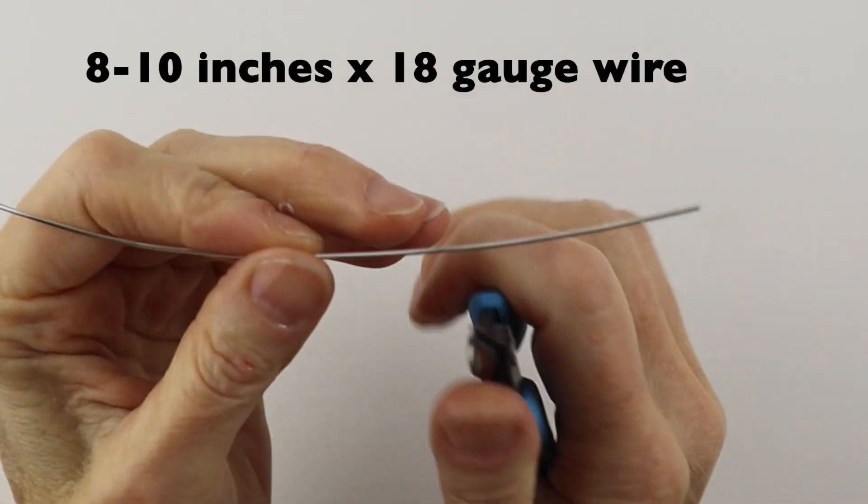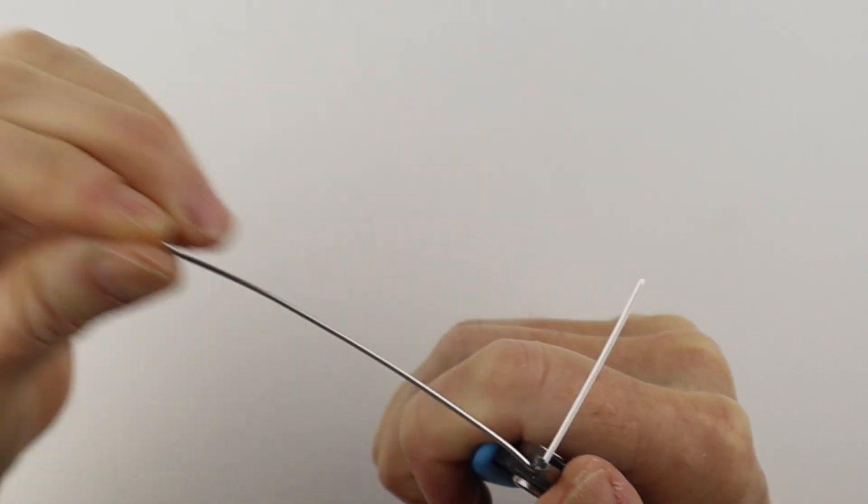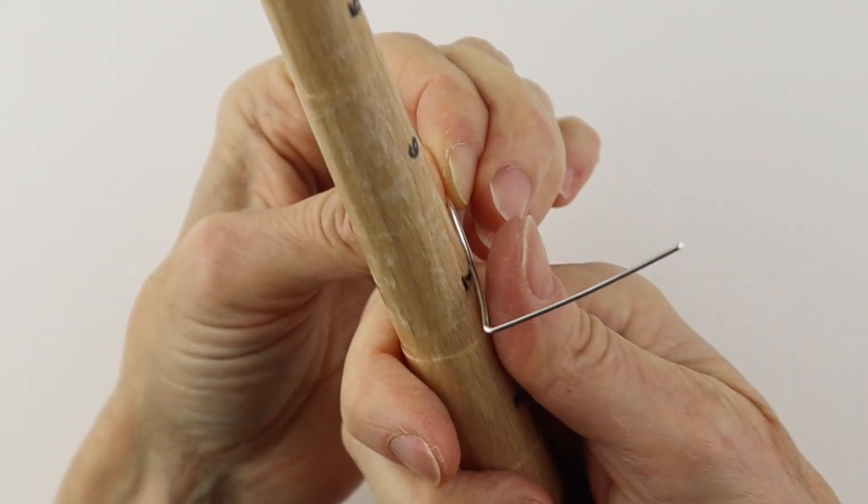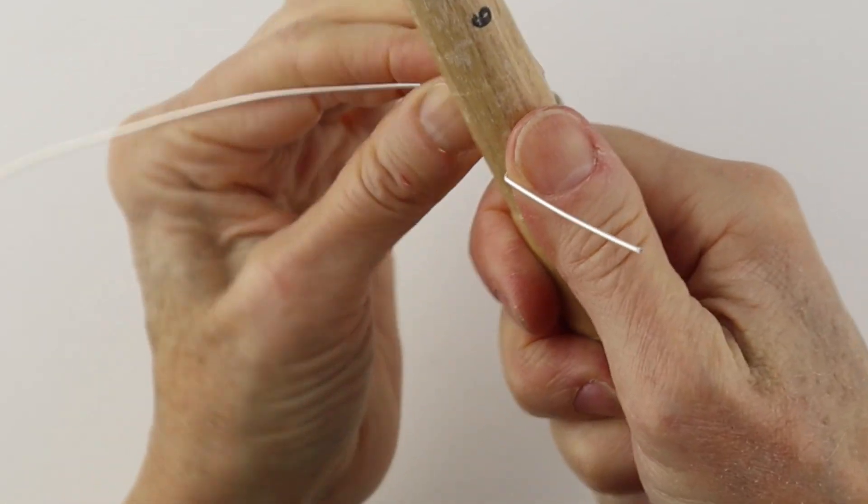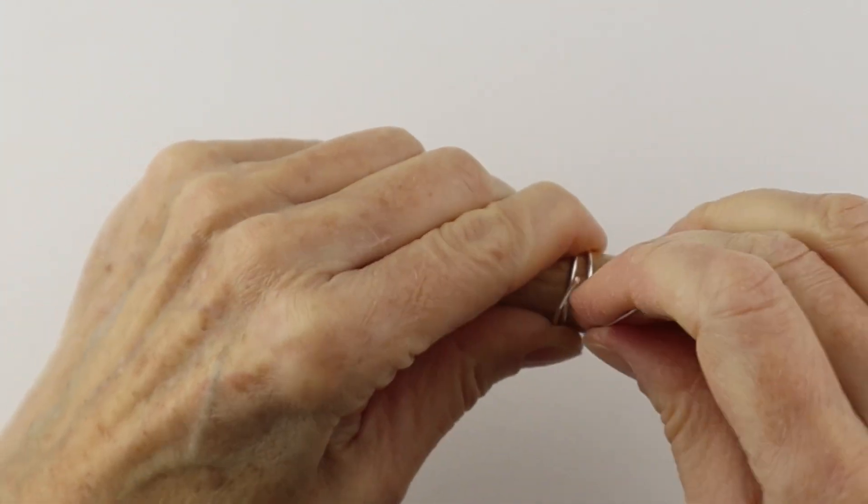To make the ring band we need 18 gauge wire. We're going to bend this at a right angle. Take your ring mandrel, hold it here with your thumb and just wind it around as many times as you want. I usually do two.